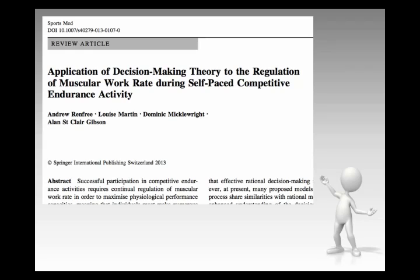Bounded rationality works if you are able to accurately model in your mind all the possible outcomes. A chess player, for instance, cannot do that because there are just so many — and yet a chess player can still beat a computer that can. A chess computer will adopt a different approach than a grandmaster: a grandmaster plays on principles, doesn't model every possible outcome, might look five or six moves ahead, but makes decisions based on principles of space and time.